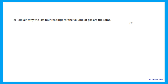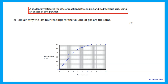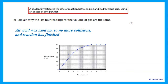Explain why the last four readings for the volume of gas are the same: the reaction starts fast, then slows down, and at the end no more gas is given. We are reacting zinc with hydrochloric acid and zinc was in excess. So at the end of the experiment, all the acid was used up — no more collisions, the reaction finished, no more gas is given off. Do not say all reactants were used up; the zinc was excess, so only the acid ran out.